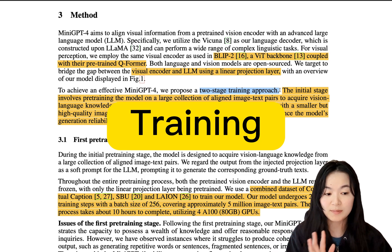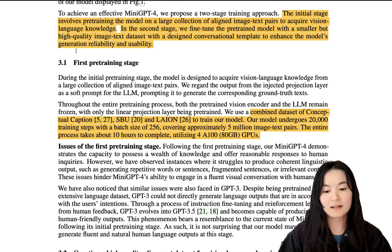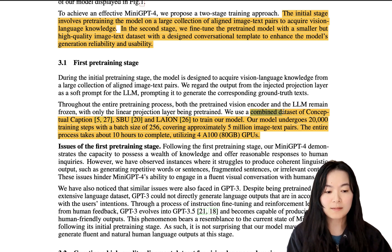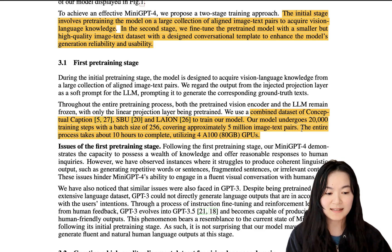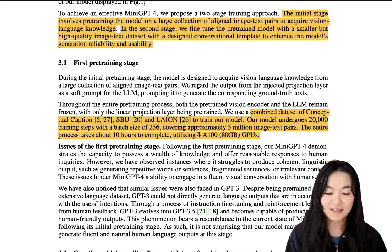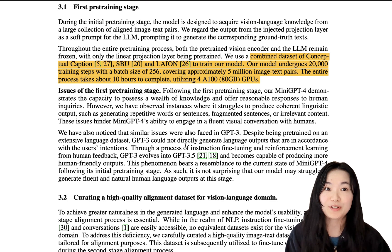There are a few parts in their training process. The first stage is the pre-training stage. In this stage they used a combined dataset of Conceptual Captions, SBU, and LAION 5 million image-text pairs. This pre-training stage only took about 10 hours to complete and used 4×120 GPUs. So it's not a huge effort — only 10 hours to train this model, which is incredible.